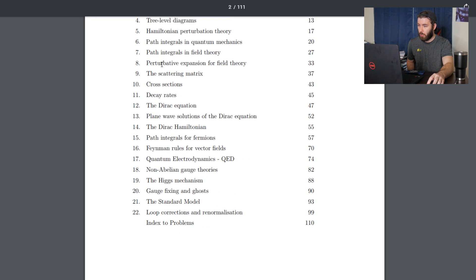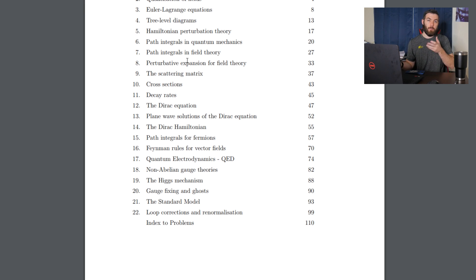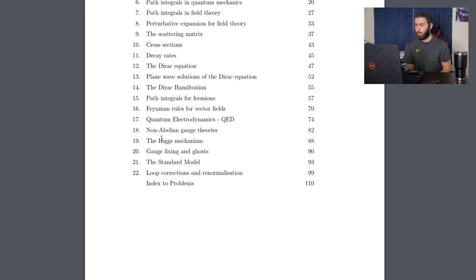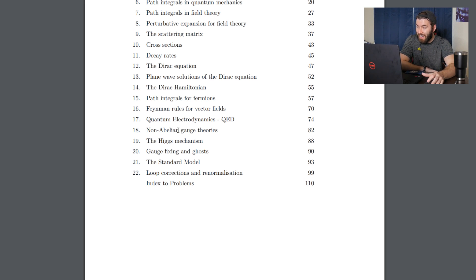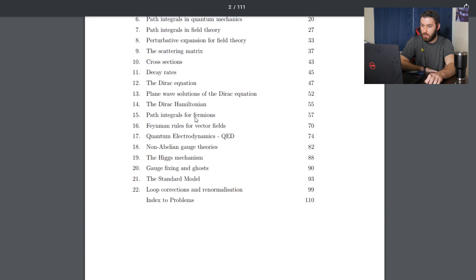Chapters six through eight cover perturbative expansions for field theory. I'd probably have to look more into what that entails, but if you have all of these simple harmonic oscillators and you want these particles to interact, you'd have an anharmonic oscillator, and since you can't solve it exactly you'd need perturbative corrections. Then chapters 15 through 22 — a nice stretch. There's path integrals for fermions, Feynman rules for vector fields, quantum electrodynamics, non-abelian gauge theories, the Higgs mechanism, probably some basic QCD right before that, gauge fixing and ghosts, the standard model, and loop corrections and renormalization — all of that in 99 pages. I'm curious to see what this whole set of notes actually looks like.